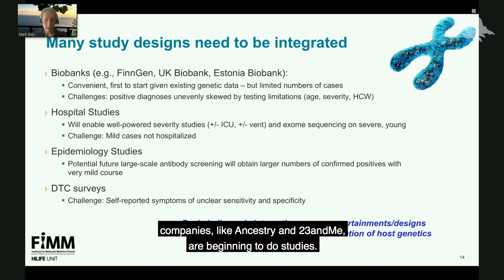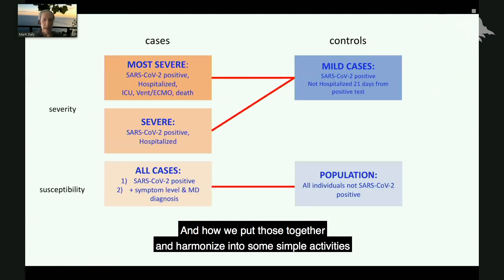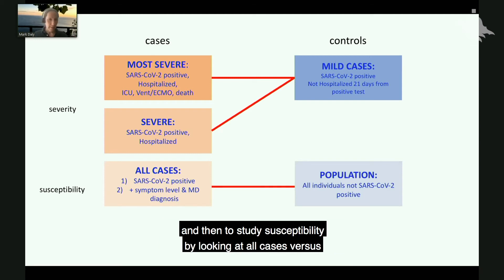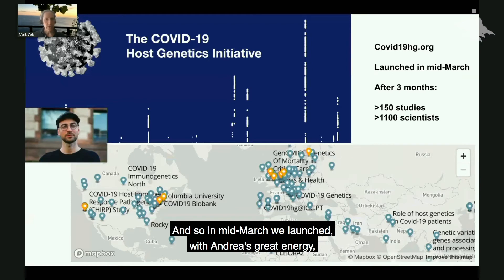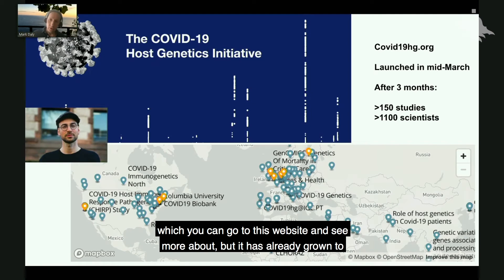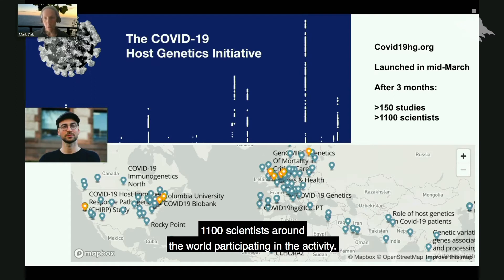Direct-to-consumer genetics companies like Ancestry and 23andMe are beginning to do studies as well. Harmonizing all of these into activities to study the severity of COVID-19 response versus mild cases, and to study susceptibility by looking at all cases versus the remainder of the population, took some time to come together. And so in mid-March, we launched with Andrea's great energy the COVID-19 Host Genetics Initiative, which has already grown to more than 150 studies and more than 1,100 scientists around the world participating.